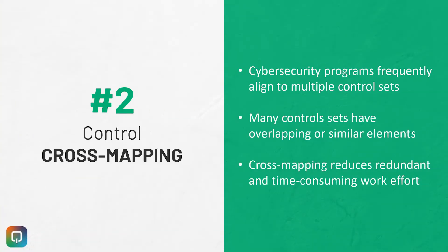The second cybersecurity program enhancer is to rely upon control cross mappings. Now, this is a bit of an imperfect science, but if used correctly, it can be helpful. The main idea is that if you're managing multiple control sets, you may be able to save time and energy by cross mapping between them.